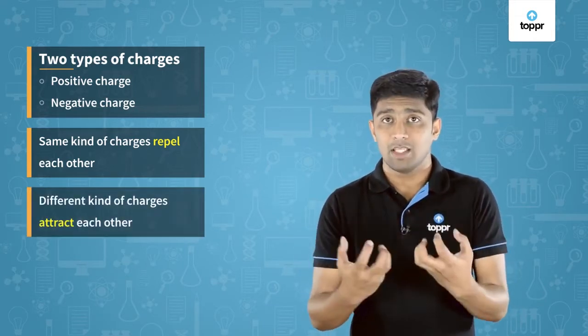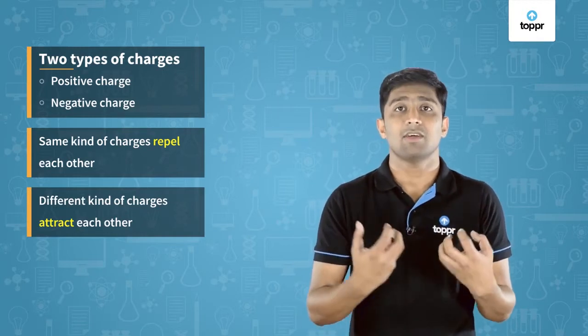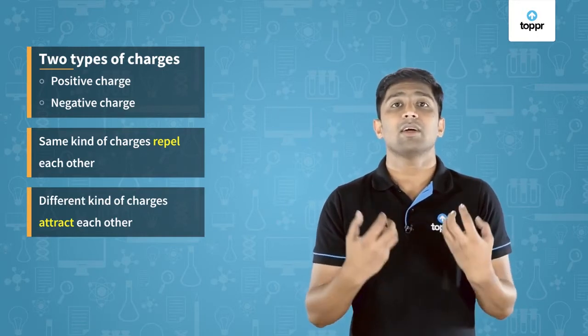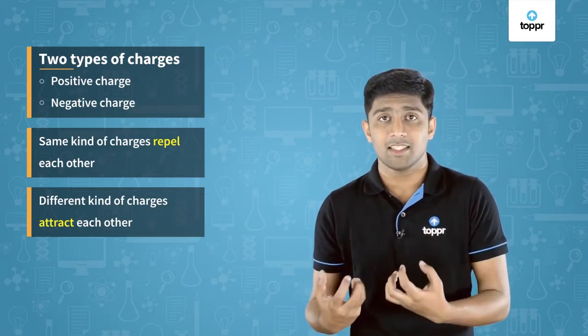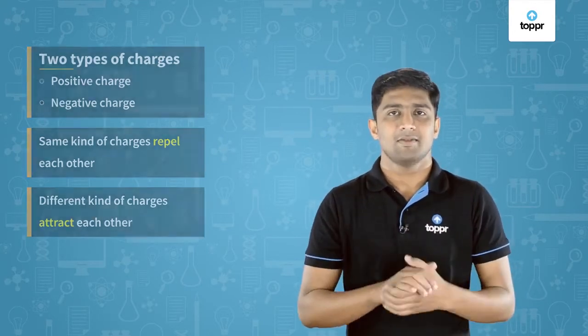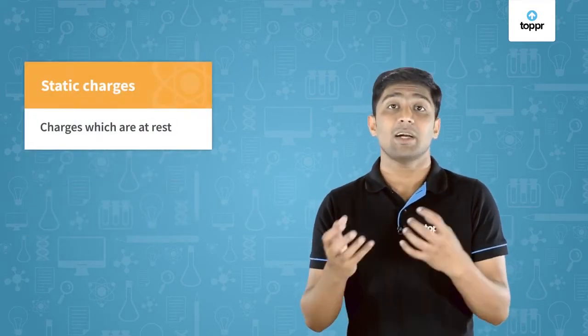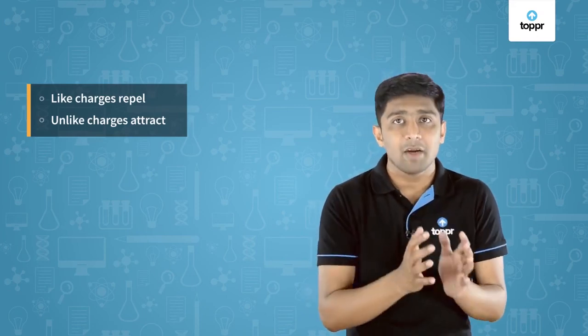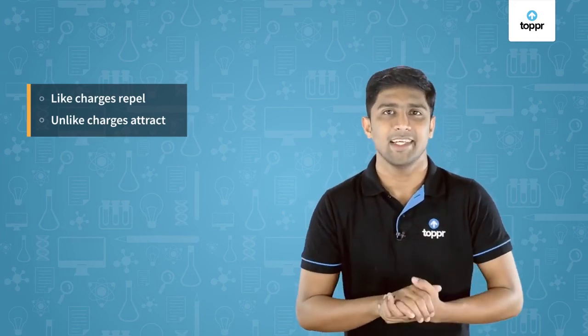When we brought the balloons near the refills after rubbing, they both had acquired different kinds of charges. Because of this, they were attracting each other. The electric charges acquired by a body due to rubbing are called static charges, which means the charges are at rest. So from this activity we observed that like or same kind of charges repel each other, and unlike or different kind of charges attract each other.